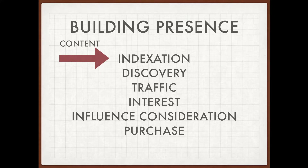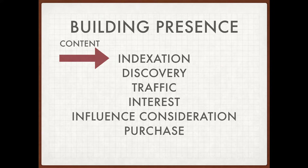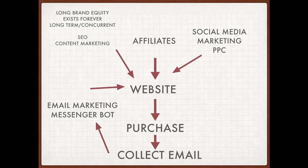This generates traffic through content marketing, and that generation of traffic creates interest because people are interested in your content. You're starting to become a likable business or personal brand. Eventually they move on to the influence and consideration stage, where they will eventually move on to the purchase segment. This is basically the structure of how content marketing and SEO works.